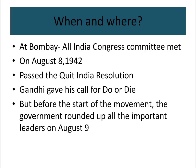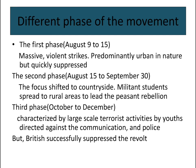When and where: The All India Congress Committee met at Bombay on August 8, 1942, and passed the Quit India Resolution. Gandhi gave his call for 'Do or Die.' However, before the start of the movement, the government rounded up all the important leaders on August 9th.